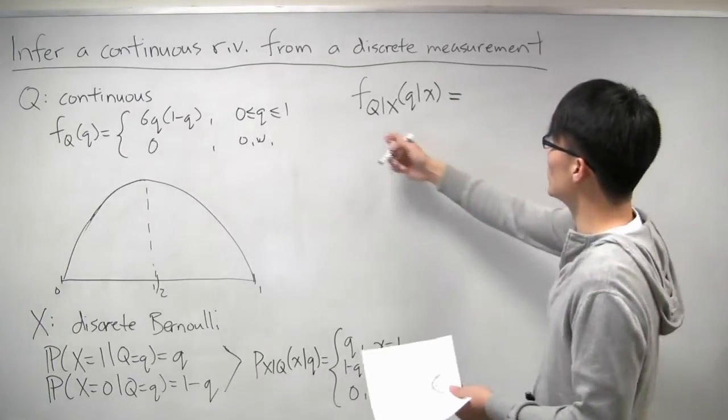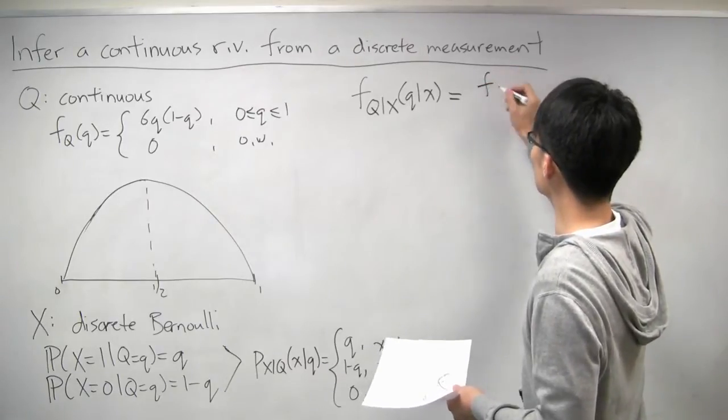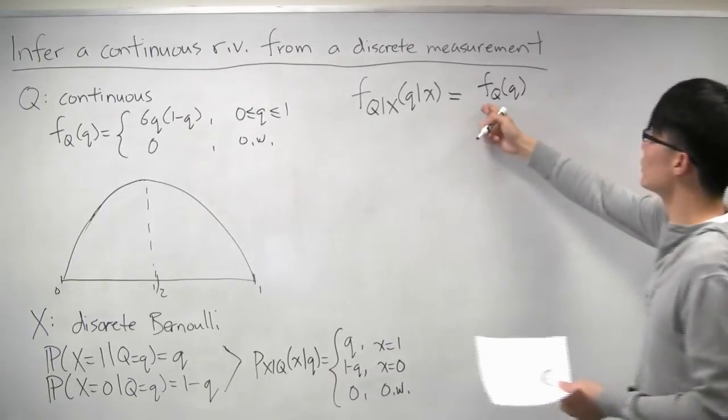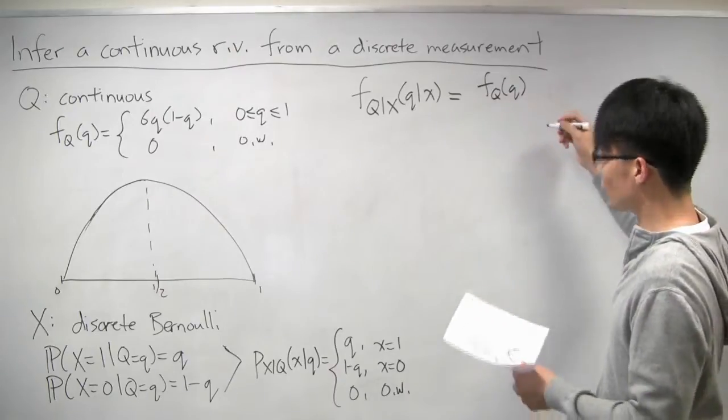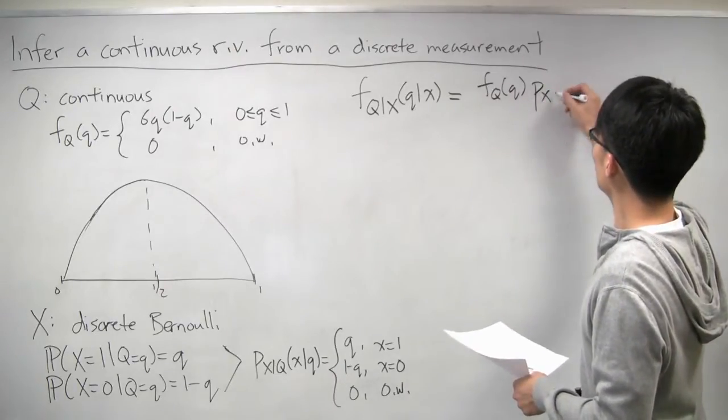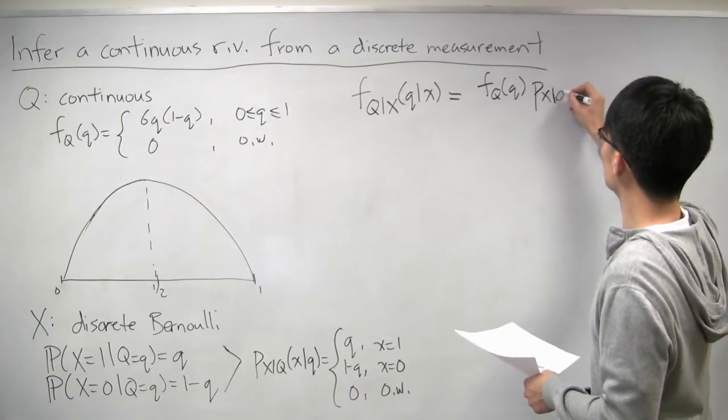And remember Bayes' rule, it consists of several terms. The first one is the numerator, which is our prior initial belief, which is just the regular PDF of q, times the conditional PMF of x given q.